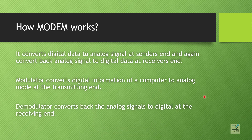How does the modem work? It converts digital data to analog signal at the sender's end, and converts the analog signal back to digital data at the receiver's end. The modem has two components: the modulator converts digital information of a computer to analog mode at the transmitting end, and the demodulator converts the analog signal back to digital data at the receiving end. But why is this required?